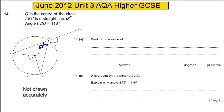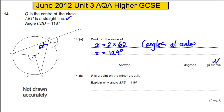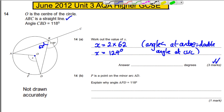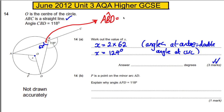Now we need to work out the value of X. We should know that angles at the center are double the angles at the circumference. Therefore X must be 2 × 62, which gives X = 124 degrees. State the rule: angles at center equal double the angle at circumference. Also note on your diagram that angle ABD = 180 − 118 = 62 degrees, showing your working.